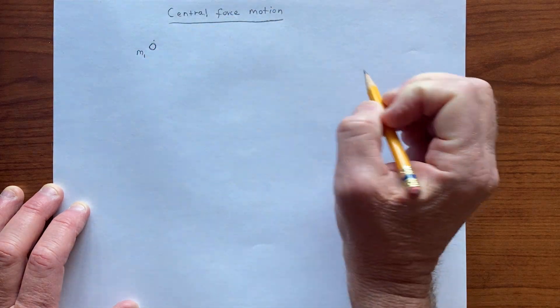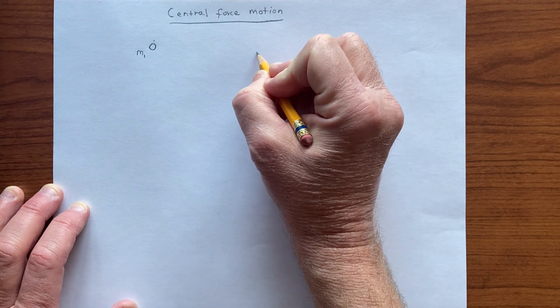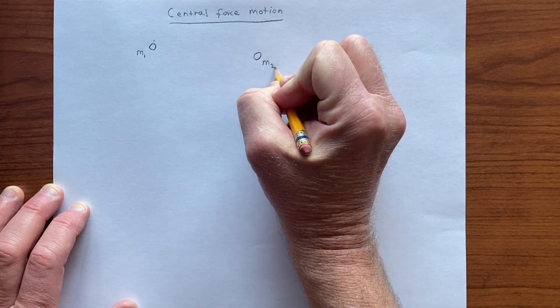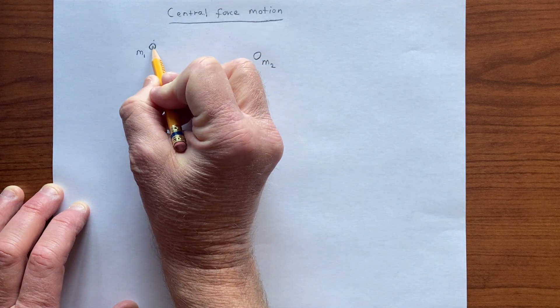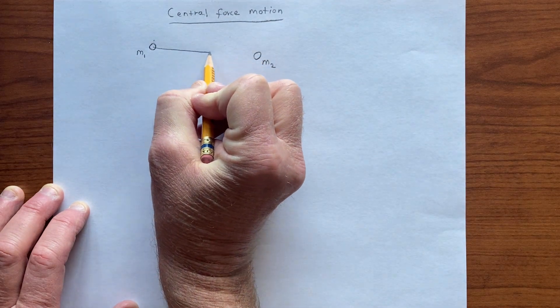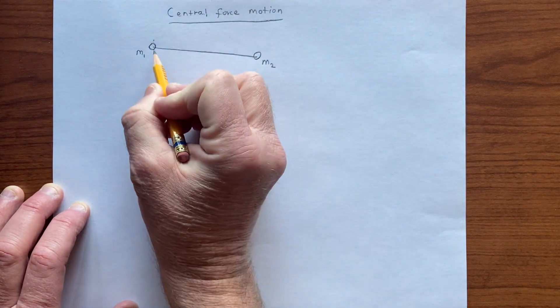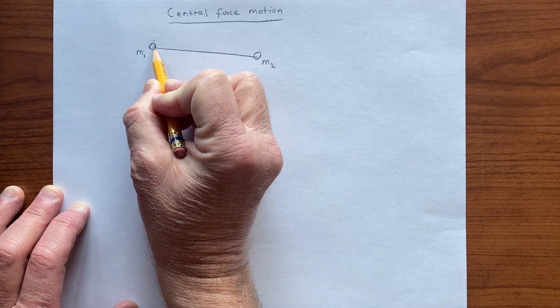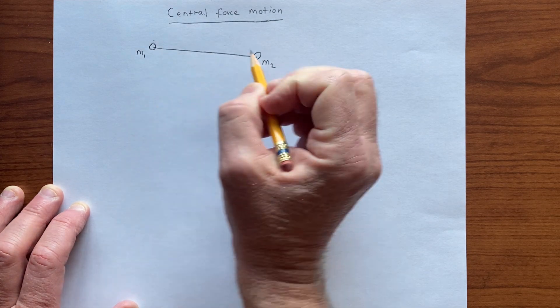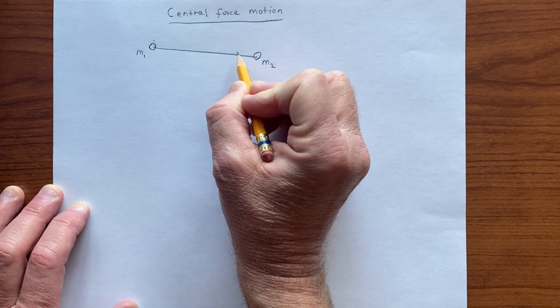So the gravitational force is central force motion of mass m1 and m2, and the force is along that direction. So the force on this one, if it's gravity, would be that way, the force on this one would be that way.